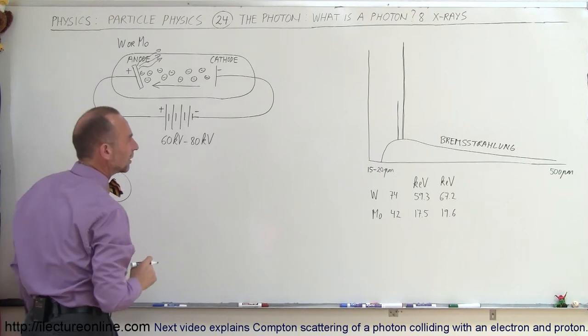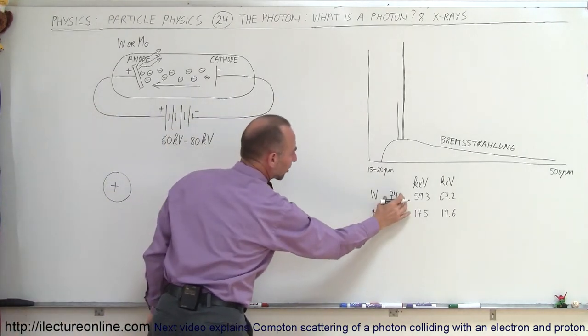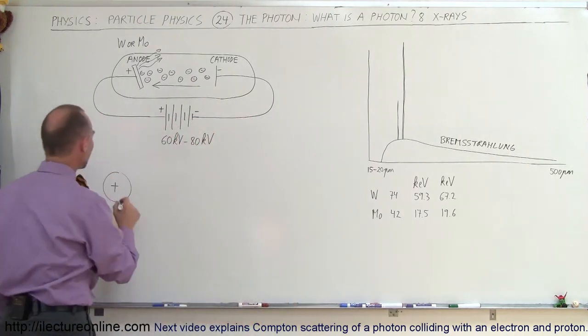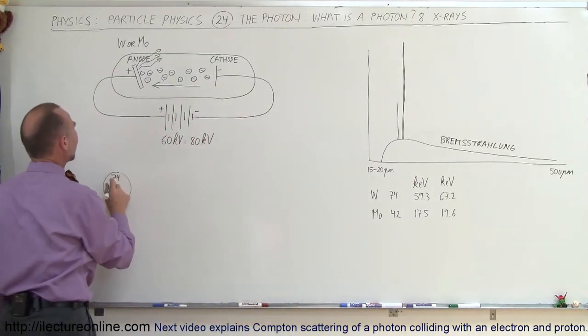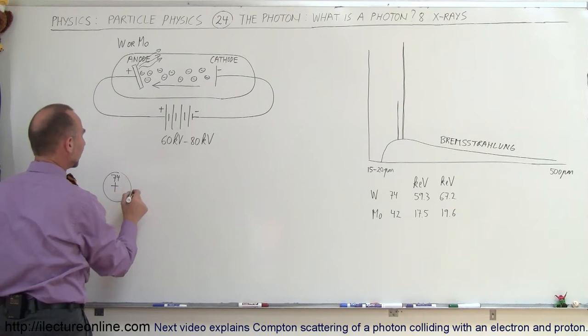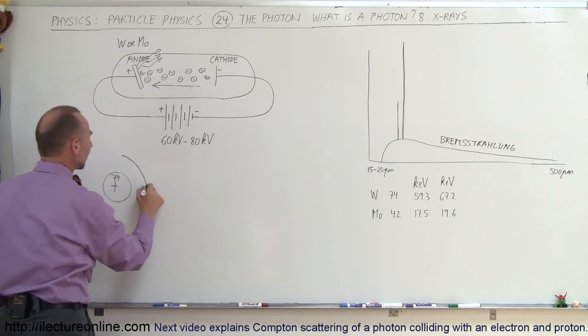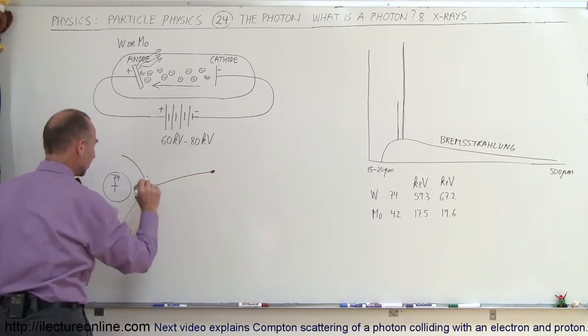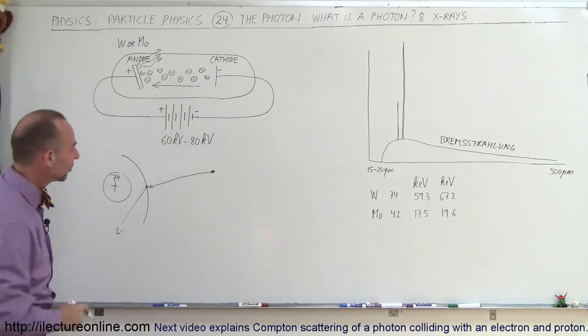In the case of tungsten, it has atomic number 74. Molybdenum has atomic number 42. So, there would be 74 protons in the nucleus of tungsten. And so, in the innermost energy level, if there's an electron there and another electron comes in and is able to knock this one out of that orbital.